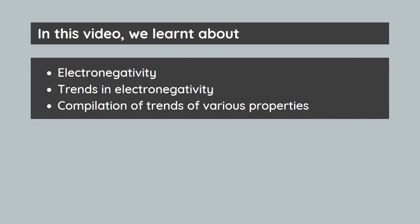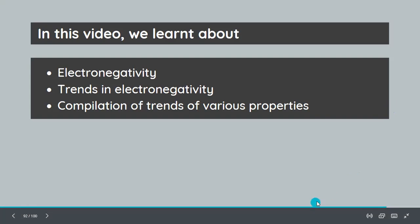We also learned about the compilation of trends of various properties. It's generally easy to understand this and then come to the compilation part because all the properties are clearly mentioned on that table. With that, we finish the physical properties and periodicity. In the next video, we'll be dealing with the chemical properties, especially valency and oxidation states.